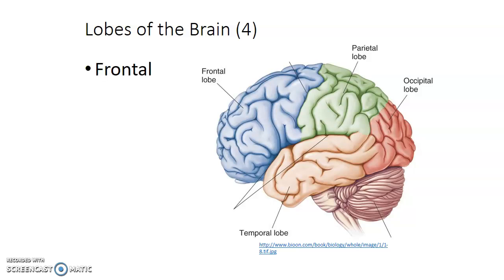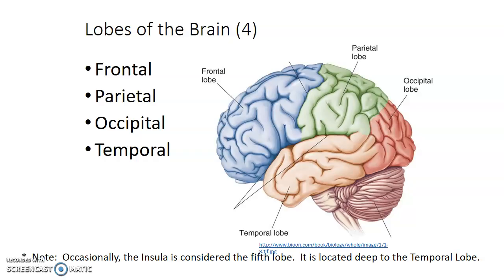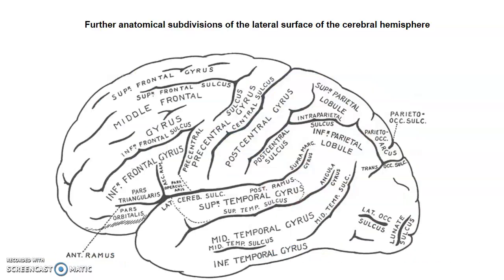The four lobes are the frontal lobe, parietal lobe, occipital lobe, and the temporal lobe. The frontal lobe is separated from the parietal lobe by the central sulcus. The temporal lobe is separated from the frontal and parietal lobes by the lateral sulcus. The transverse fissure separates the cerebrum from the cerebellum. We also have the insula, which is the fifth lobe, and it is deep to the temporal lobe.